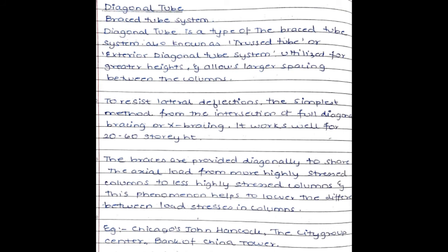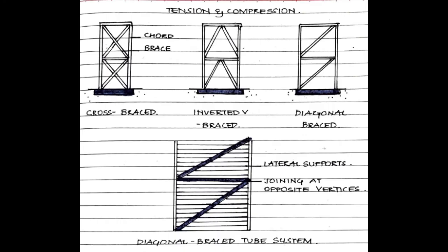Next, the diagonal tube, also known as the braced tube system or truss tube or exterior diagonal tube system. It is utilized for greater heights because it allows a larger spacing between the columns. The range of this braced tube system is from 20 to 60 storeys. To resist lateral deflections, the simplest method is the intersection of full diagonal bracing or X-bracing. The braces are provided diagonally to transfer axial load from more highly stressed columns to less stressed columns. Examples include Chicago's John Hancock Center, Citigroup Center, and the Bank of China Tower.